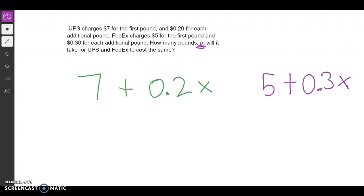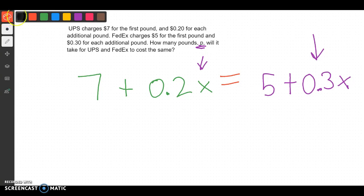So how long will it take them to be the same? Because obviously, on the first pound, UPS is more expensive. But it seems like every additional pound, this gets a little bit cheaper, because it's only .2 instead of this price of .3. So we want to know when they are the same. So when these two things are the same. Let's see if we can solve that.